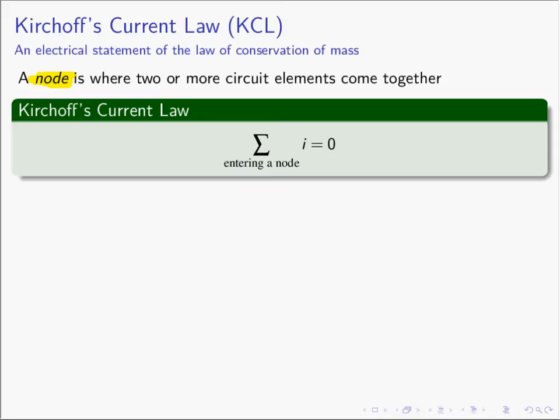Kirchhoff's Current Law states that the sum of the currents entering a node equals zero. Kirchhoff's Current Law is really an electrical statement of the law of conservation of mass. Current is a charge flow rate, so in KCL we are accounting for the charge flow rate — accounting for all charges and making sure we haven't lost, created, or destroyed any of them.